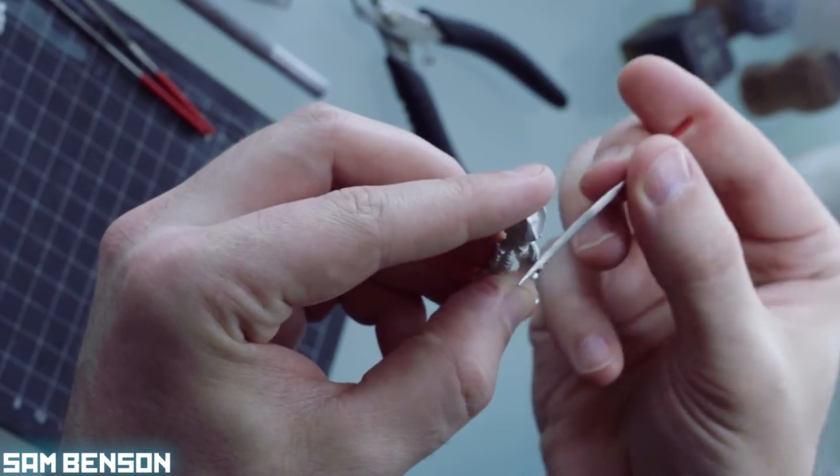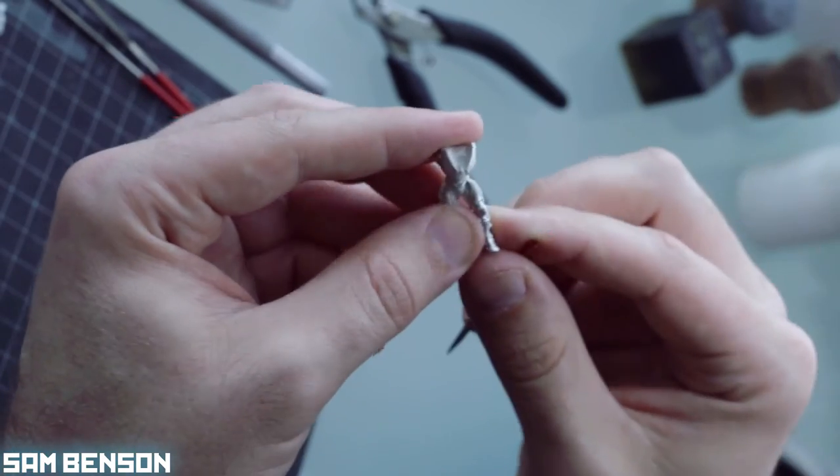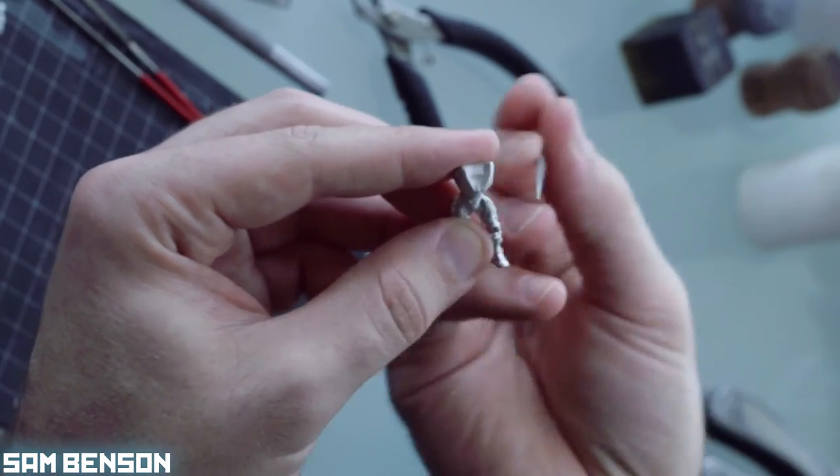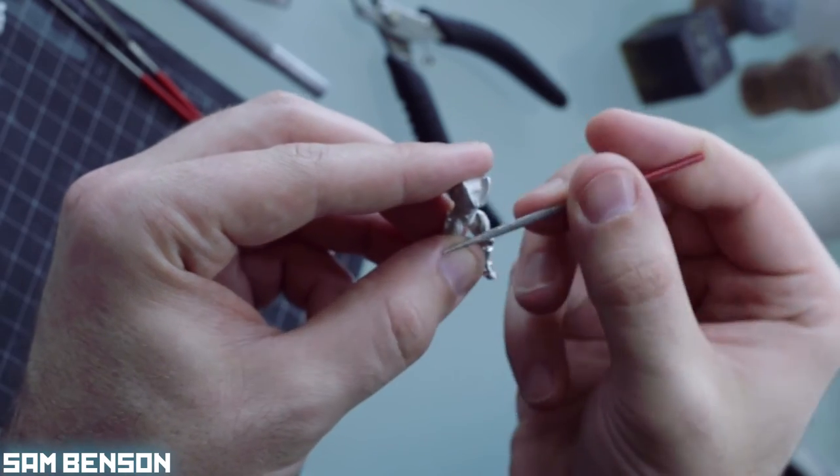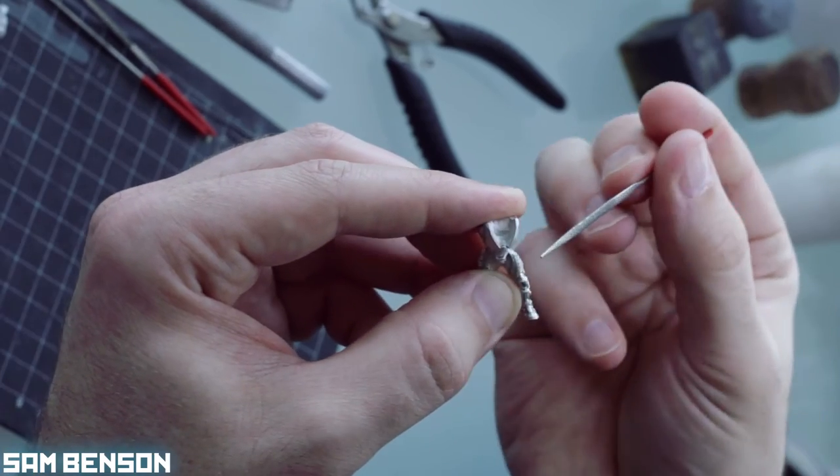You'll see here I'm also working over the whole area, not just getting the mold line off. That's basically to make sure that on a round surface like this, I'm not leaving a flat spot where I've just taken the mold line off.